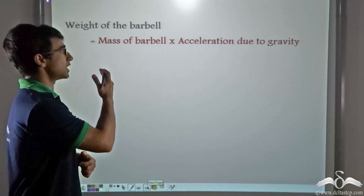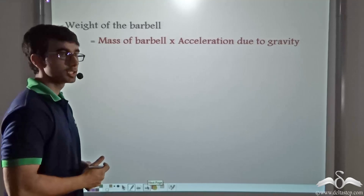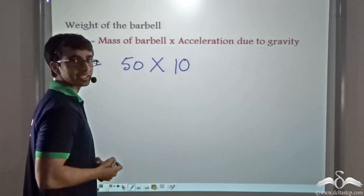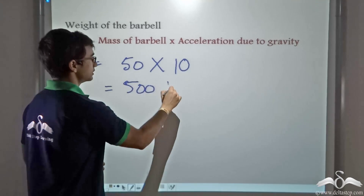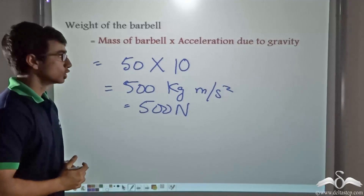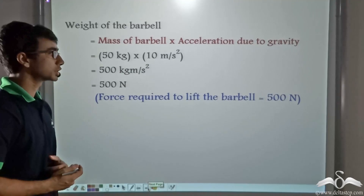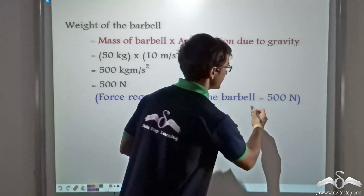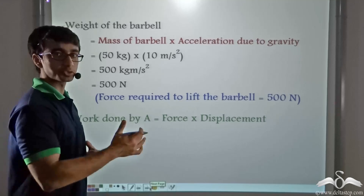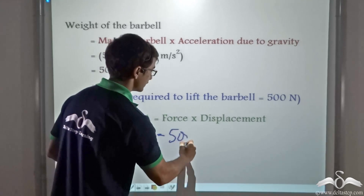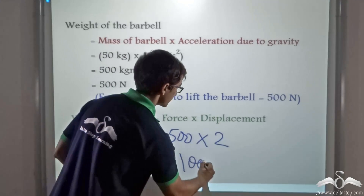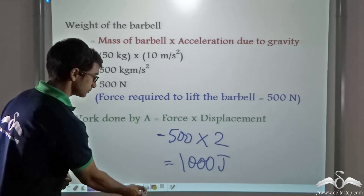The weight of the barbell is mass times acceleration due to gravity. The mass is 50 kg and acceleration due to gravity is 10 m/s², so the weight is 500 Newton. Thus the force required to lift the barbell is also 500 Newton. The displacement caused is 2 meters, so the work done by weightlifter A is 500 × 2 = 1000 joules.